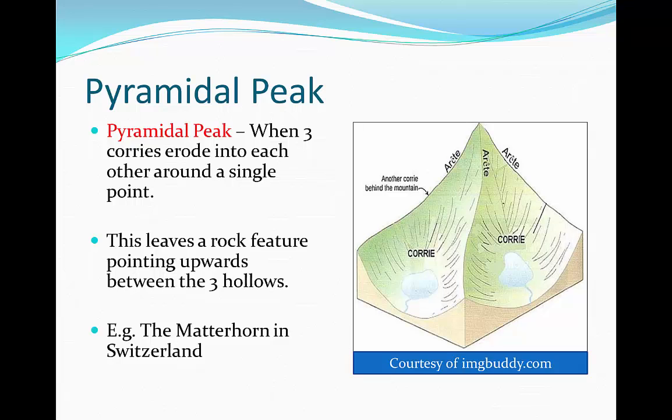What you can see here is the same diagram but imagine a third corrie on the opposite end. This creates three arêtes and the three arêtes join at the top to form a pyramidal peak.